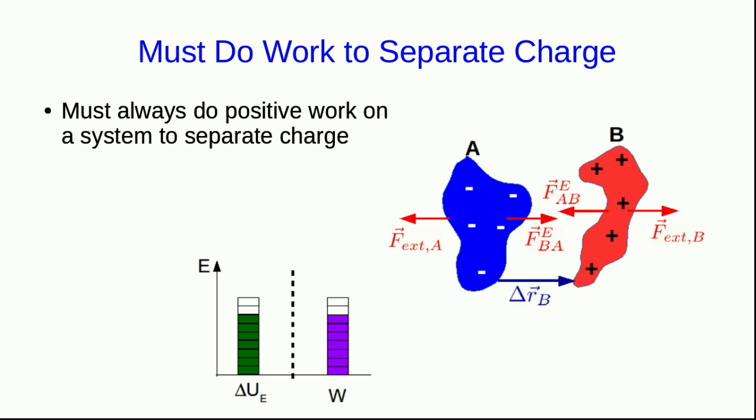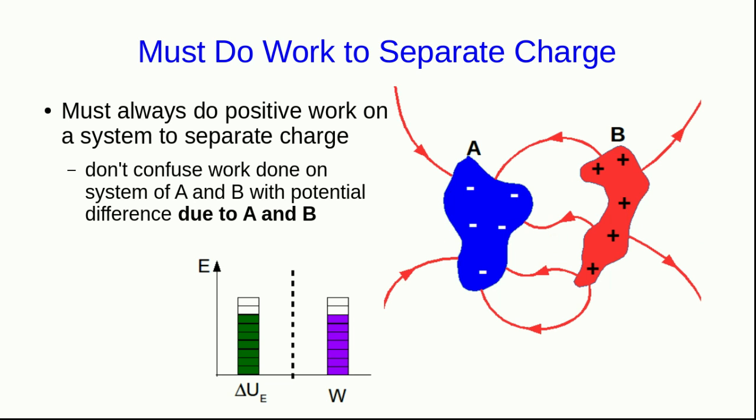And that positive work within the system acts to increase the system's electric potential energy. Note that once these are separated, there is now an electric field around them, and that will interact with other objects. But don't confuse the work done on the system of A and B with the potential difference due to A and B. These are different things.